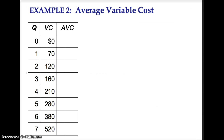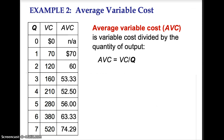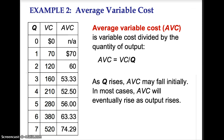Average variable cost, or AVC, is variable cost divided by quantity. Again, we cannot divide by 0, so there is no possible answer for 0 quantity. I suggest pausing the lecture and calculating average variable cost. Average variable cost starts off at $70, decreases to $52.50, and then increases to $74.29.